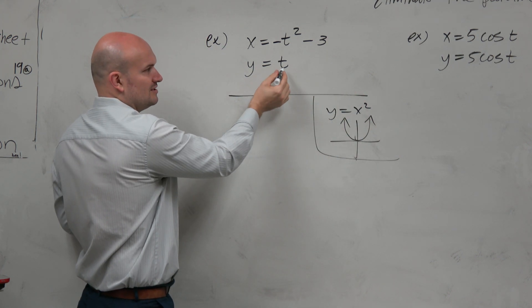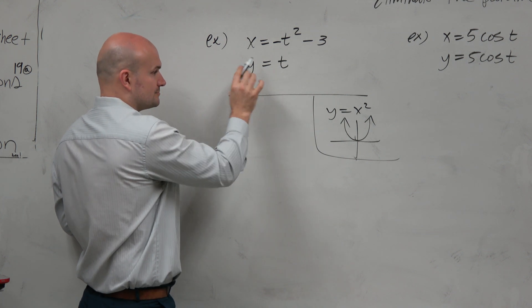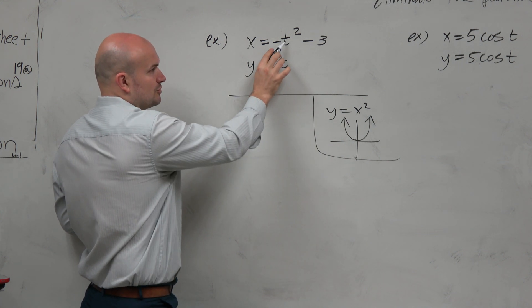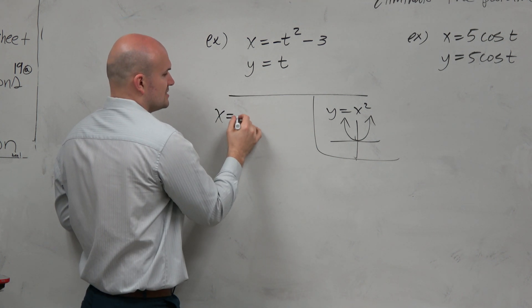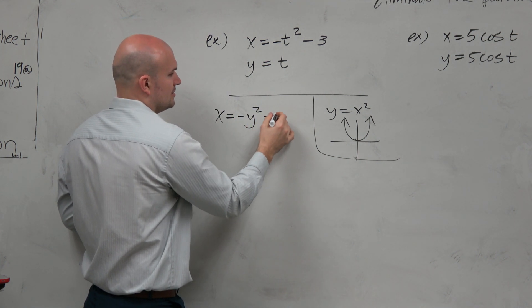Why don't we, in this case - it looks like it's pretty easy to solve for t in the y equation and substitute into the x equation. So x = -y² - 3.